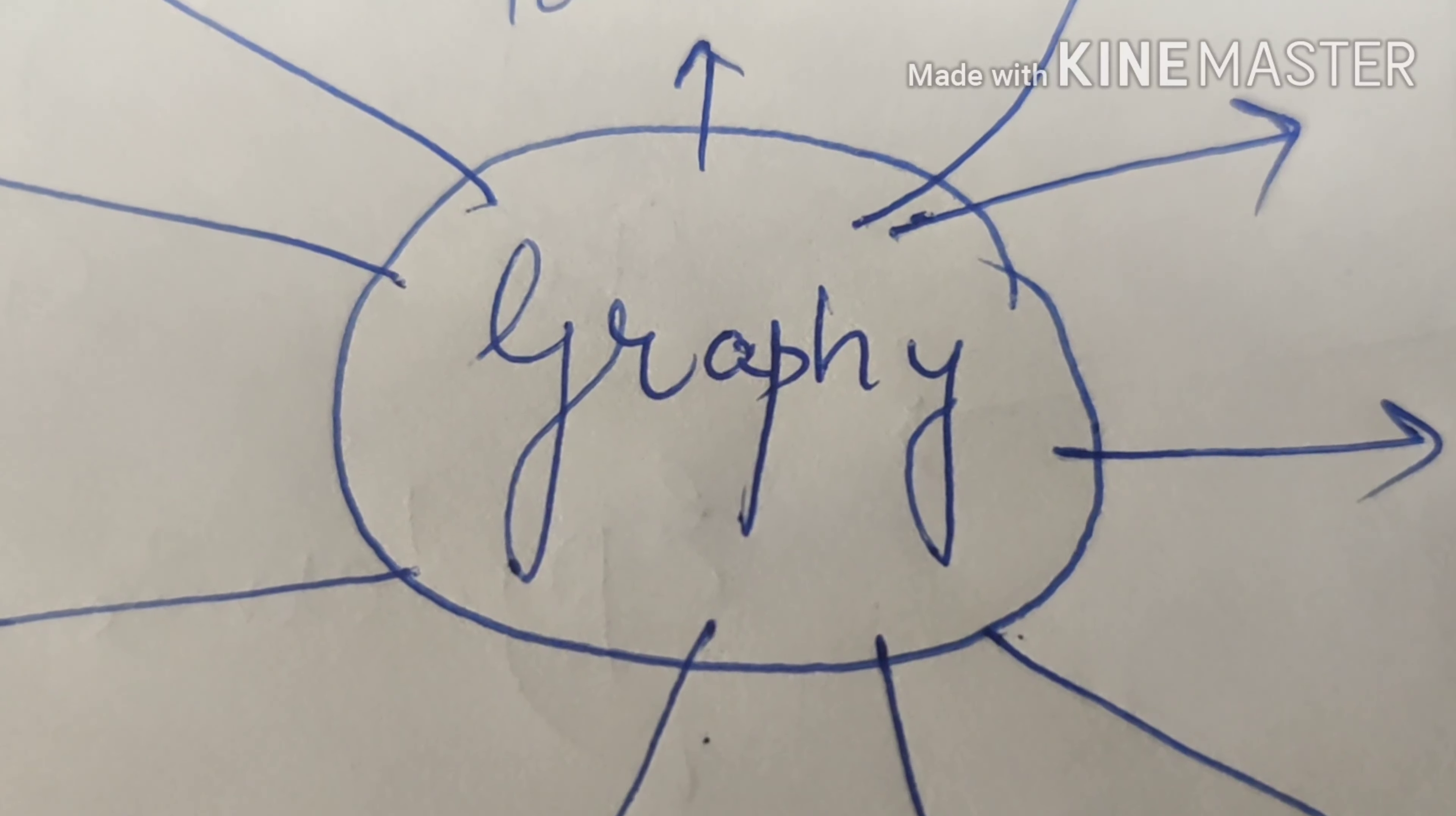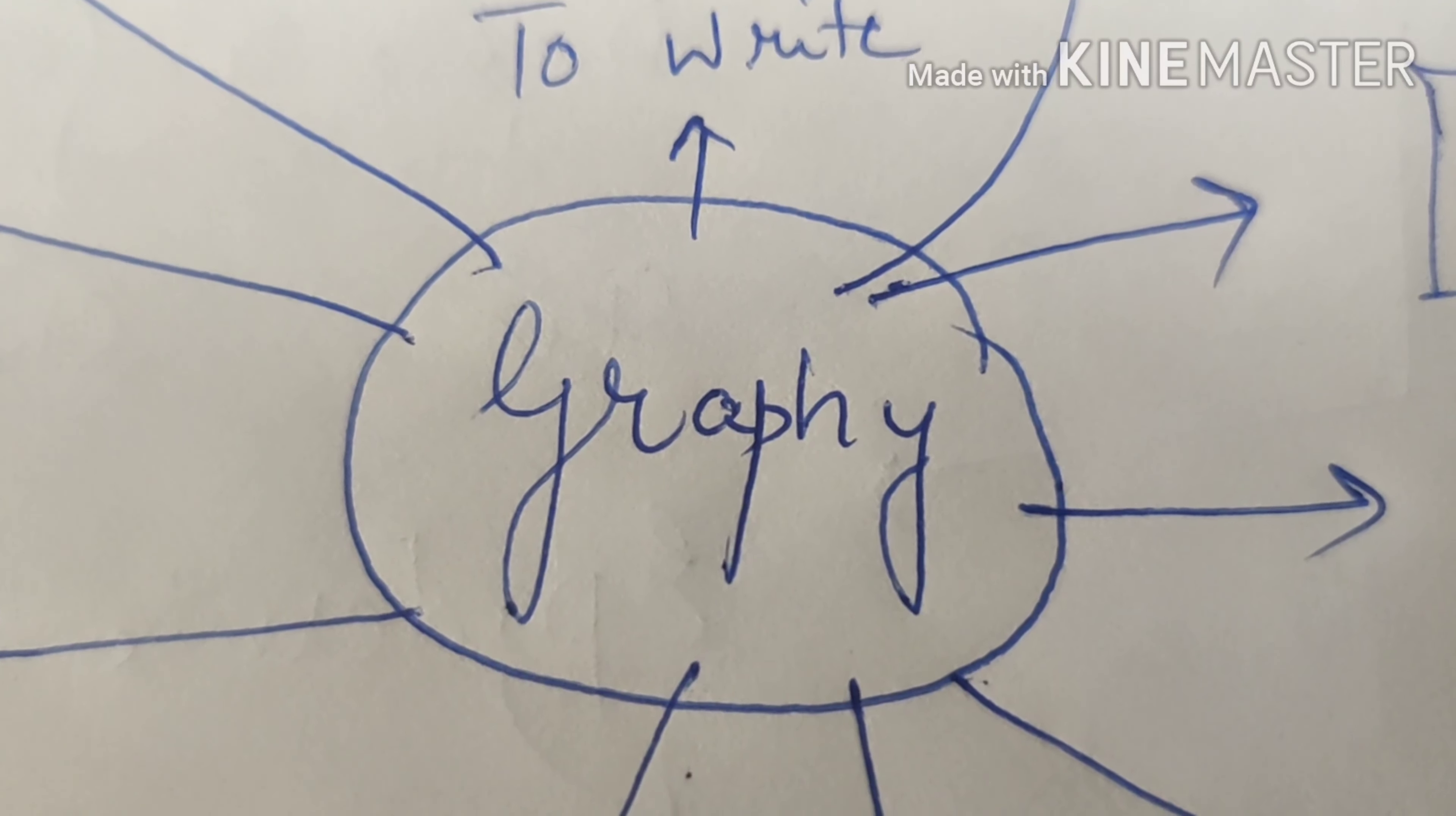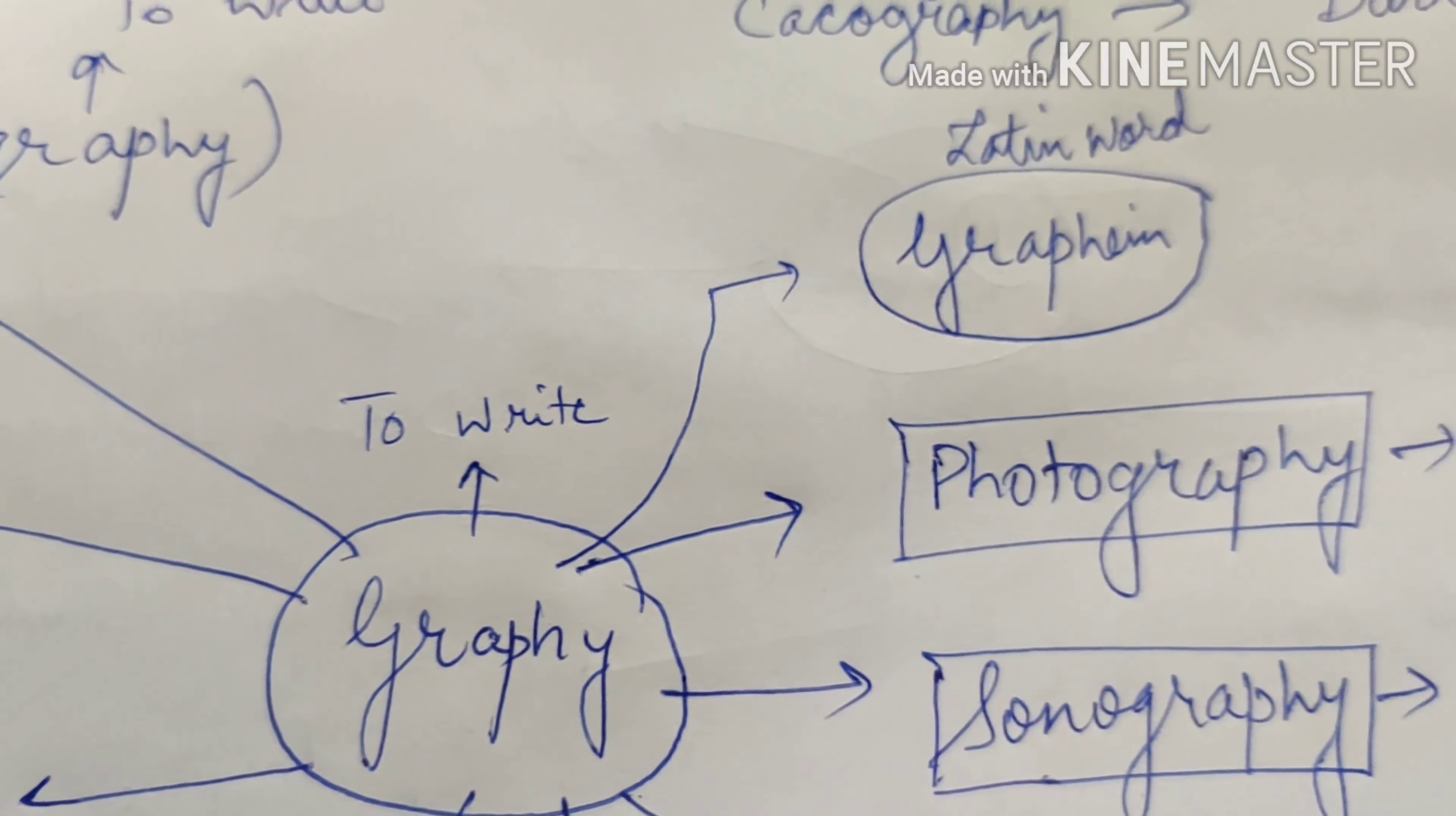The next word root is graphi. Graphi refers to write. Graphite is one word you can remember it with. Graphite is the metal which is used in pencils. Graphi refers to write and graphene is the Latin word root for the same.